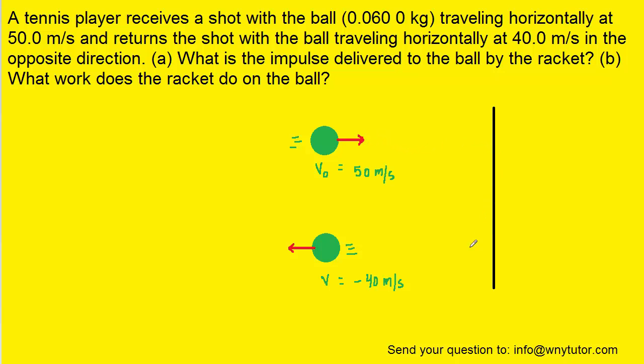It then hits a tennis racket and rebounds with a final velocity of negative 40 meters per second. This is very important. You'll notice that we put a negative sign on the 40, and that's because the velocity must include the direction.